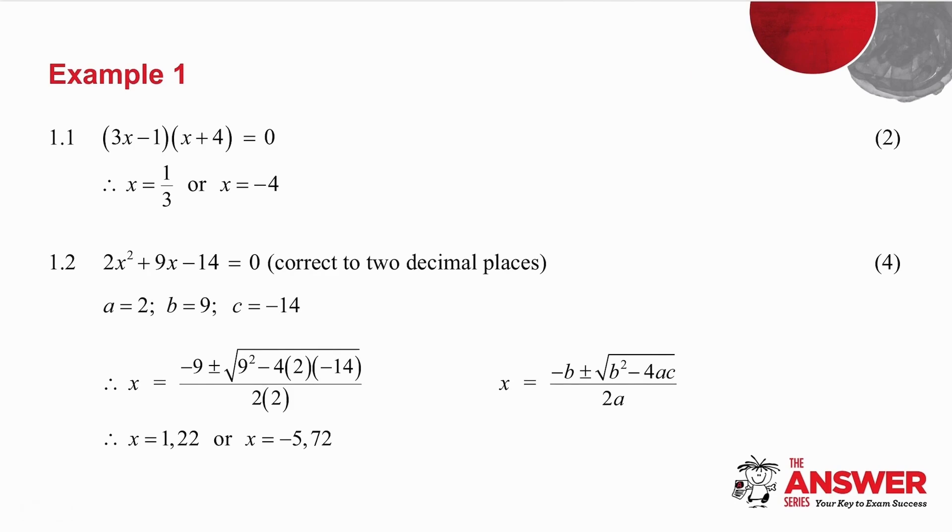The first example, they've given you brackets equal to zero. This question is only worth two marks. Do not multiply the brackets out, because if you multiply them, you're going to have to factorize them again. So they've given it to you in factorized form. Two brackets multiply to give you zero, one of them must be zero. So either x is a third, or x is minus four.